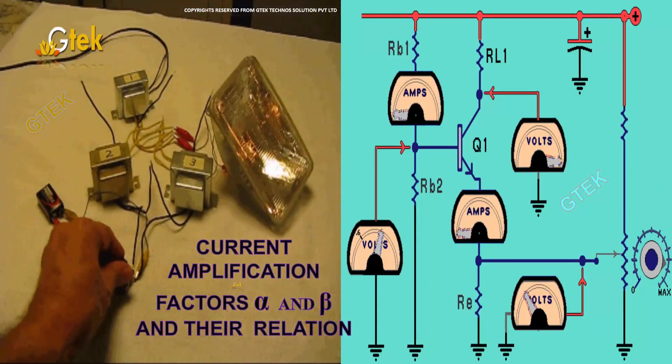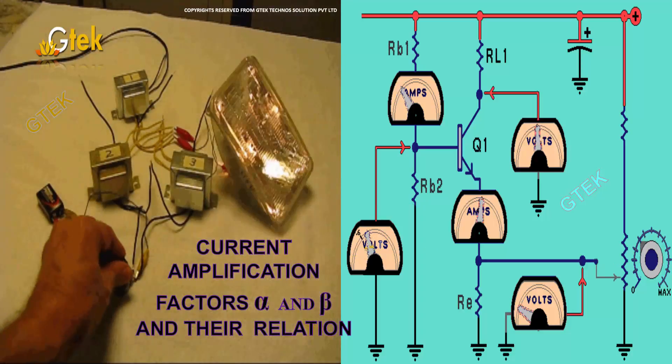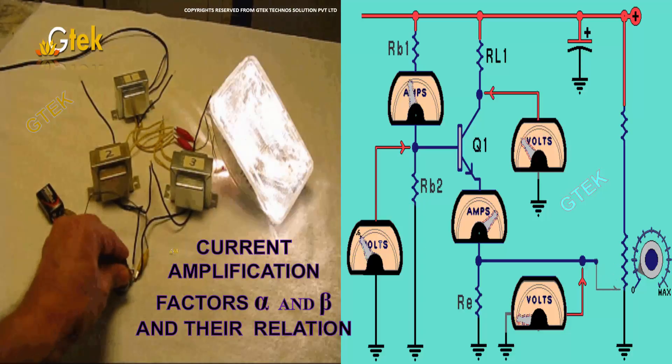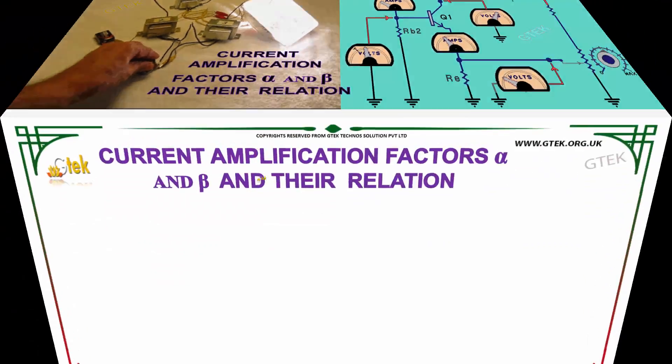The current amplification factors alpha and beta and their relationship - these are things we're going to see now. So based on the changes, you are able to see the brightness of the light is controlled. That's current amplification.